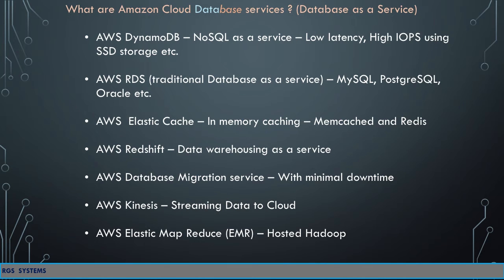On the other hand, Redis is an open-source key-value pair data store that can provide structured data structures — sorted lists and stores. Based on your application needs, you can go with either Memcached or Redis.